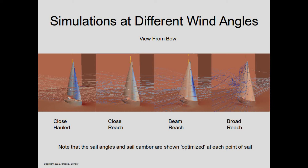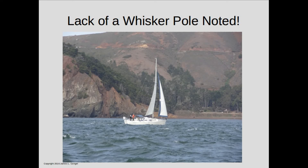We'll talk much more about sailing downwind in part three. All these simulations assume that a whisker pole is being used to keep the foot of the jib properly positioned relative to the mainsail. As an example of do as I say not as I do — here's a J32 headed towards the Golden Gate Bridge on a broad reach without a whisker pole deployed on the jib, so the jib is much too close to the mainsail. In this case there were about 10 or 15 other sailboats clustered around the Golden Gate Bridge to navigate through, making sailing shorthanded with a whisker pole probably not the best idea.